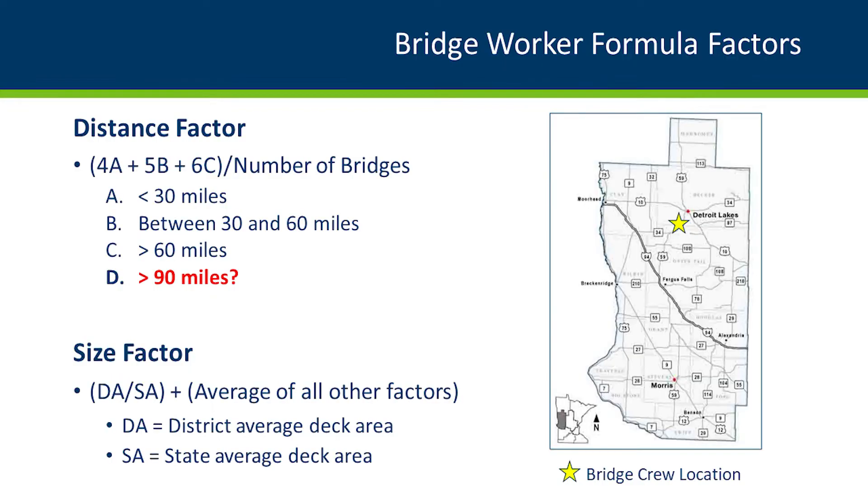The size factor is based on deck area for deck bridges and roadway area for culverts. It looks at a district average divided by the state average, and then this factor is combined with an average of all the other factors. We also have to consider bridges that are larger and have multiple lanes, because it's a lot harder for a crew to close a center lane or two center lanes to perform that work — it takes a lot more traffic control and labor hours.